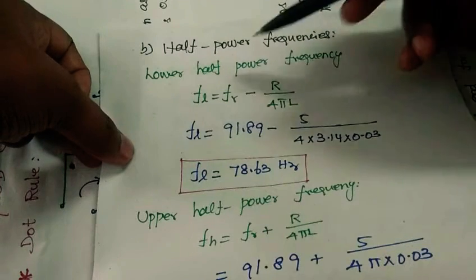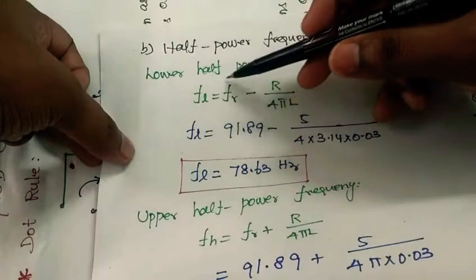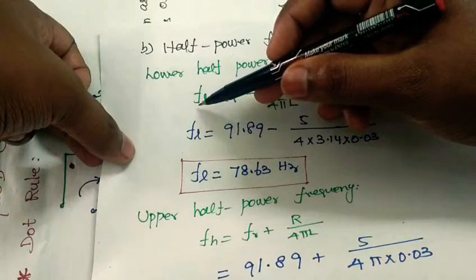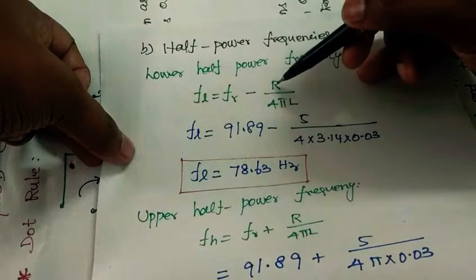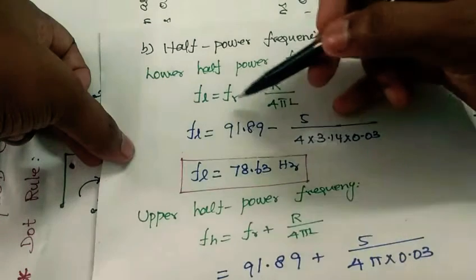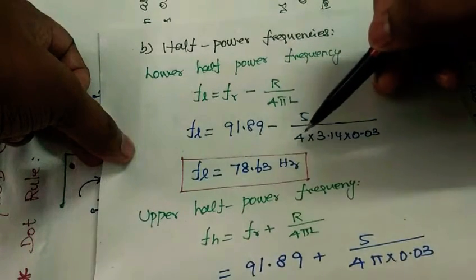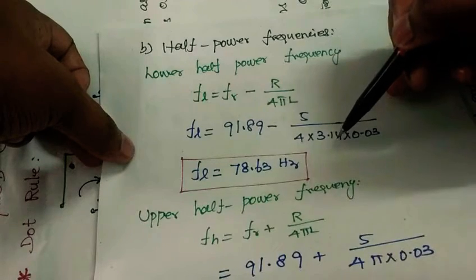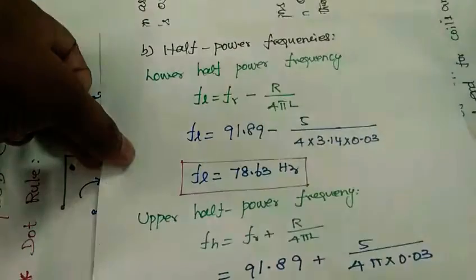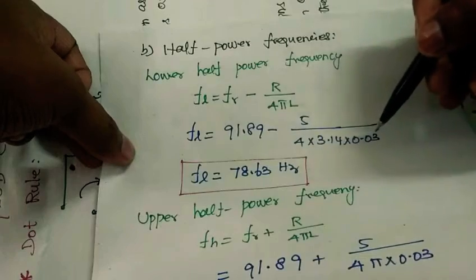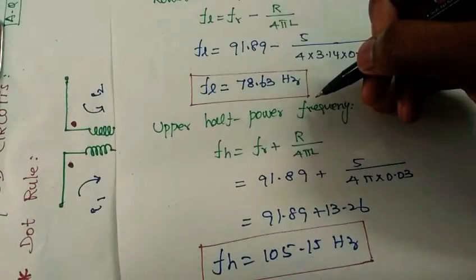Next, half-power frequencies. Lower half-power frequency is represented as F subscript L. The formula is FR minus R divided by 4 pi L, where R is resistance value and L is inductance value. FR we calculated as resonance frequency 91.89 minus R divided by 4, pi is 3.14, press shift exponential, into L 0.03. The answer is 78.63 hertz. That is the lower half-power frequency.